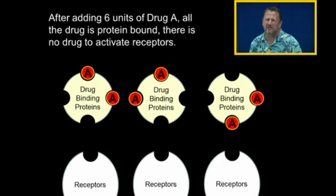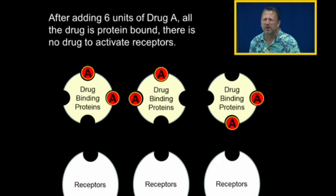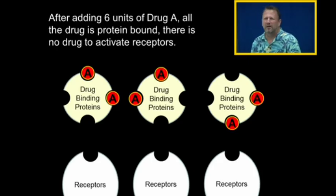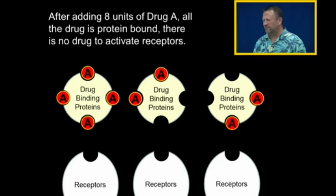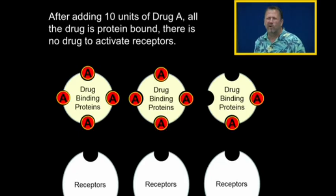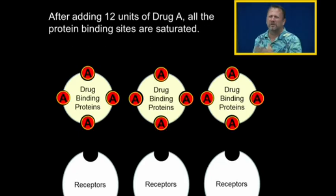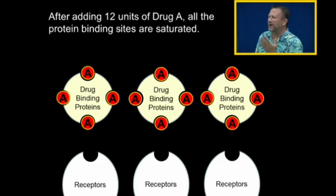We've given somebody Drug A — six units of Drug A. But Drug A is highly protein bound, it's a protein binding drug. There's no drug left to activate receptors because they go stick to these proteins. So we give six units of Drug A and we get no effect because it's highly protein bound. We can add more and more drug and still get no effect because the drug is highly protein bound — it's sticking to these proteins and it has to be free to activate receptors.